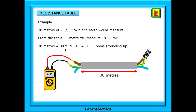Here we have a 30 meter length of 2.5 by 1.5 twin and earth cable. According to table B1, this will measure 19.51 milliohms for every meter length. Simply multiply 19.51 milliohms by the 30 meters and we have an answer of 585.3 milliohms for the whole 30 meters. Now to convert this to ohms, divide by 1,000 and we have 0.59 ohms when we round up.